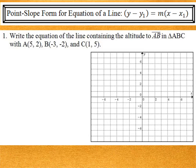As we write the equations of these lines, we're going to use our old friend, the point-slope form. I've got that at the top of each slide for you guys to refer to. In this problem we're going to write the equation of the line containing the altitude to segment AB in triangle ABC with those points. So the first thing that makes sense to me to do is to draw the triangle.